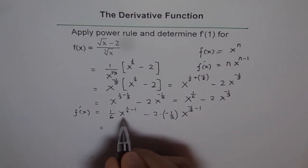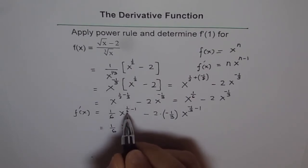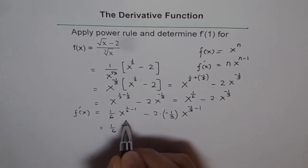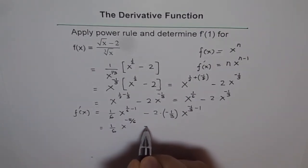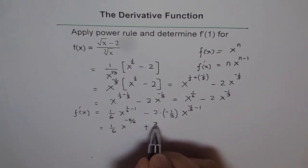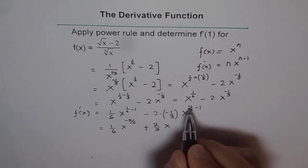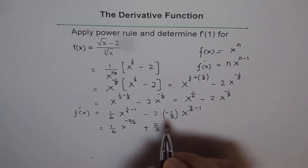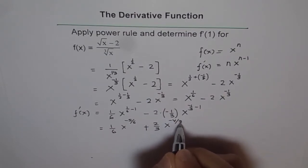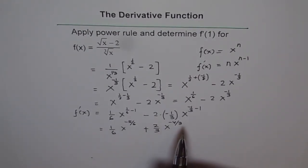Writing it out: 1/6 times x to the power of (1/6 minus 1) gives x to the power of minus 5/6. For the second term, minus 2 times minus 1/3 gives plus 2/3, and the exponent minus 1/3 minus 1 equals minus 4/3. So f'(x) equals (1/6)x^(−5/6) plus (2/3)x^(−4/3). That is the derivative of this function at any point.